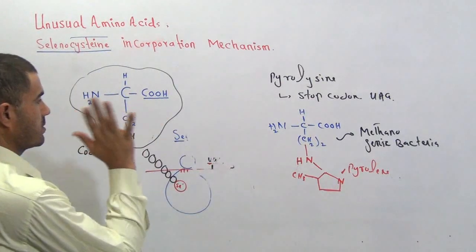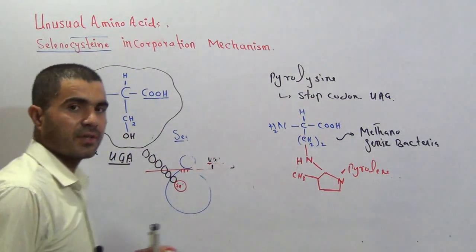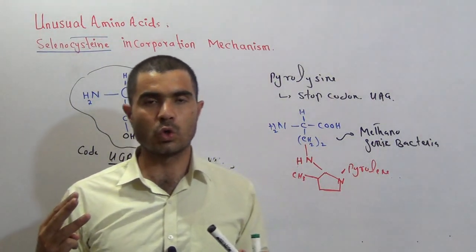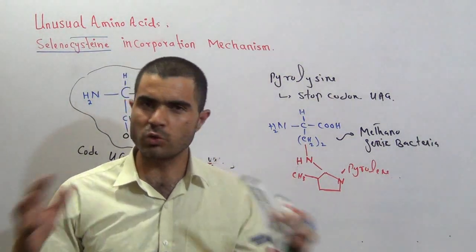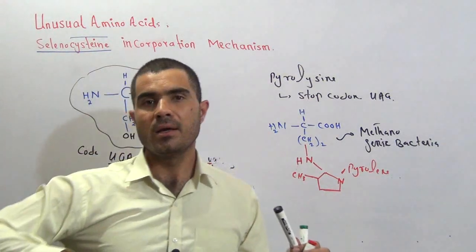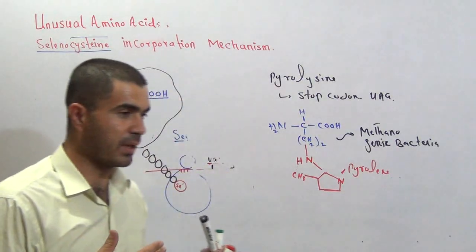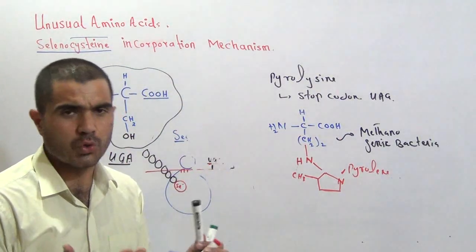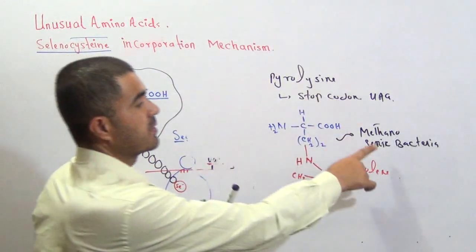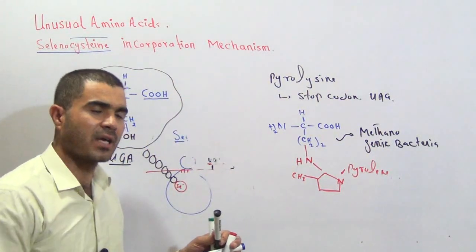Selenocysteine, on the other hand, is present in all three domains of life: archaeabacteria, eubacteria, and eukaryotes. Pyrrolysine is only present in certain prokaryotes such as methanogenic bacteria, while selenocysteine is present in both prokaryotes and eukaryotes.